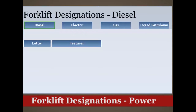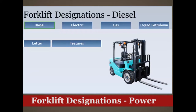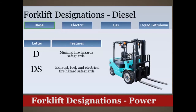Diesel powered forklifts have three sub-designations. D style forklifts come with minimal fire hazard safeguards. DS forklifts include exhaust, fuel, and electrical fire hazard safeguards. DY forklifts include all the safeguards from DS models and have no electrical equipment. They also have temperature limitation features.